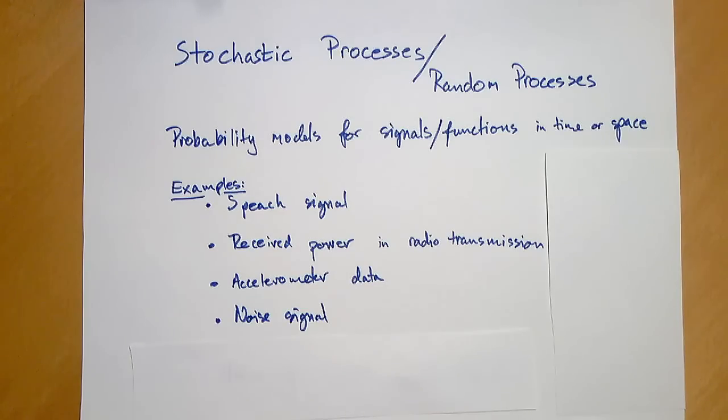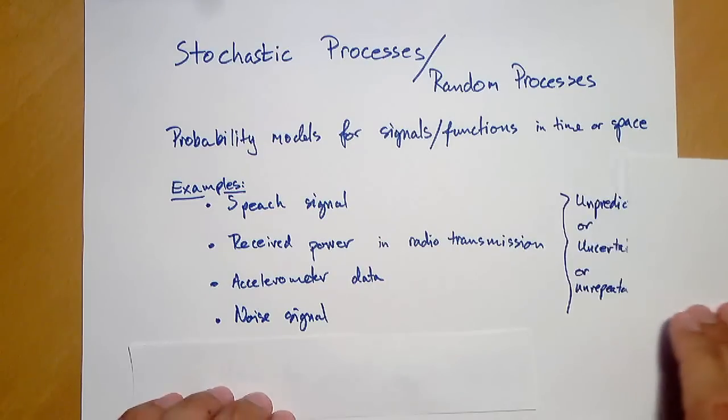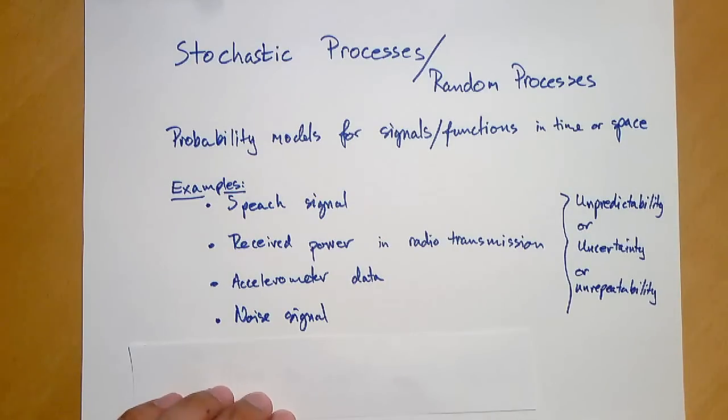So these were four examples of signals that may be modeled as random processes. They have in common that there are some certain unpredictability or uncertainty to them or maybe unrepeatability. We can't repeat the same measurement even if we really wanted to or really tried to.